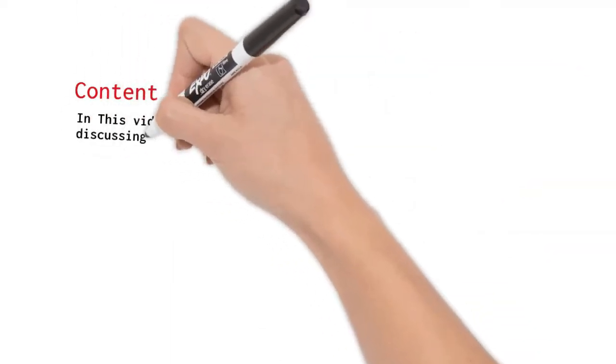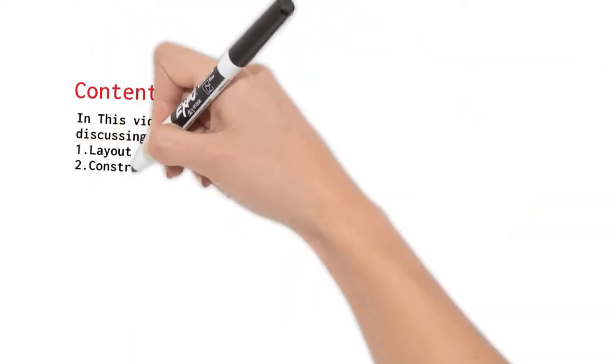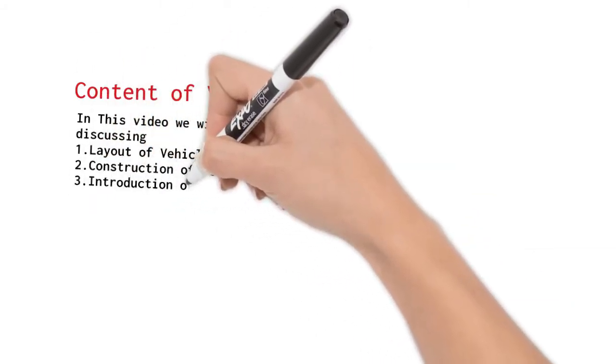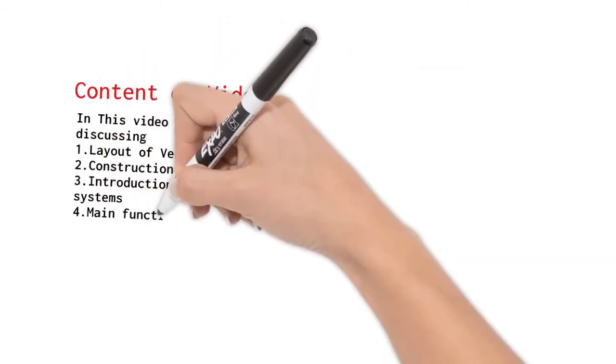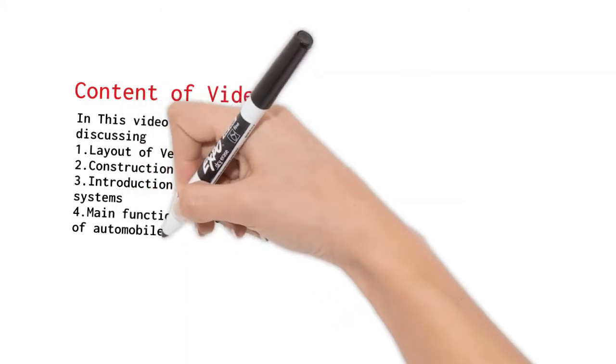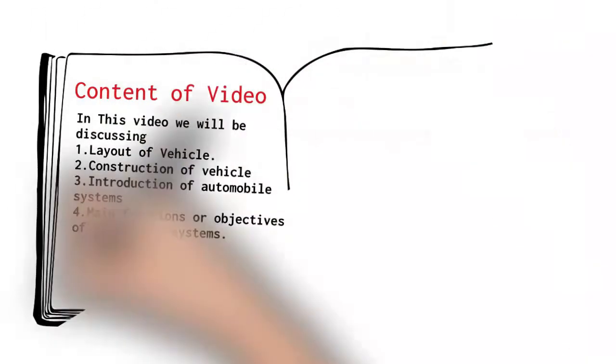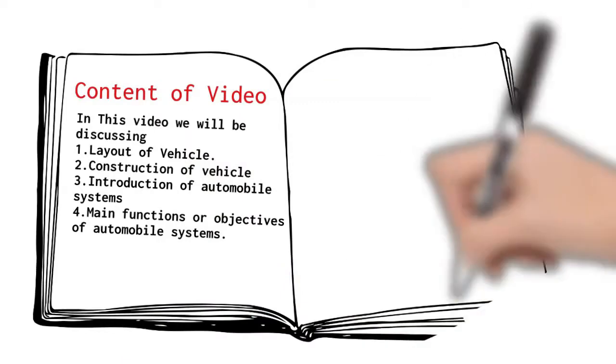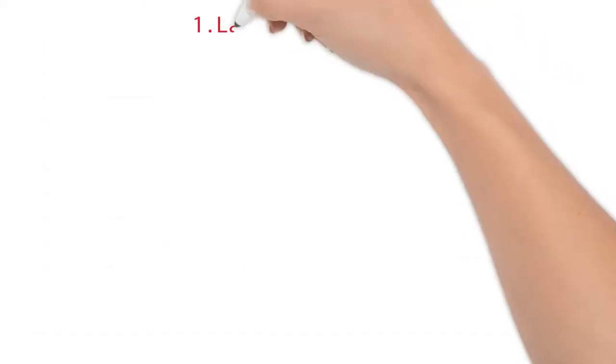In this video, we will be discussing layout of a vehicle, construction of a vehicle, introduction of automobile systems, main functions or objectives of automobile systems. We will be covering detailed construction, types, working and functions of every automobile system in separate upcoming videos.